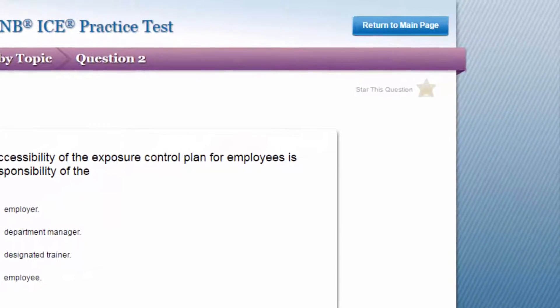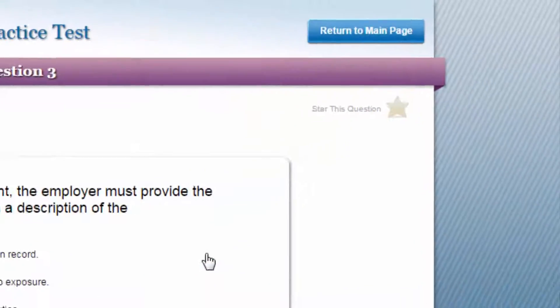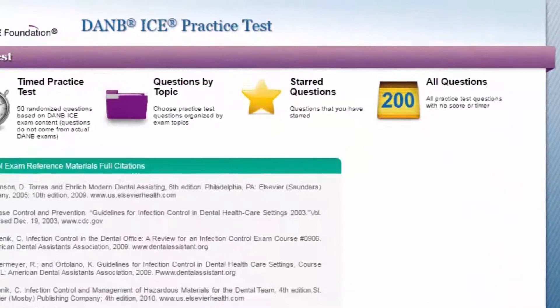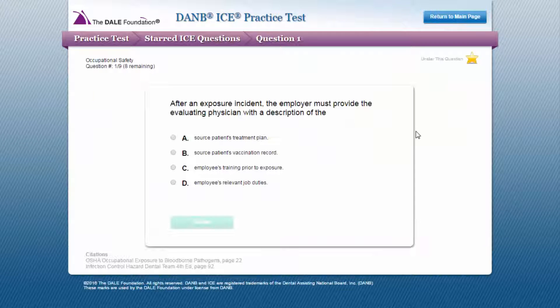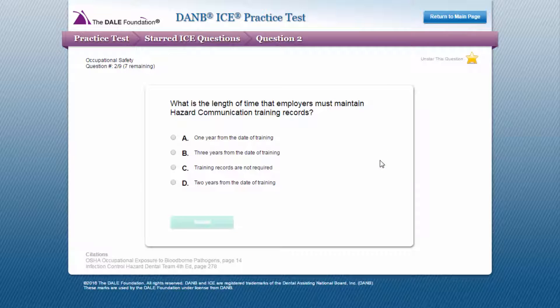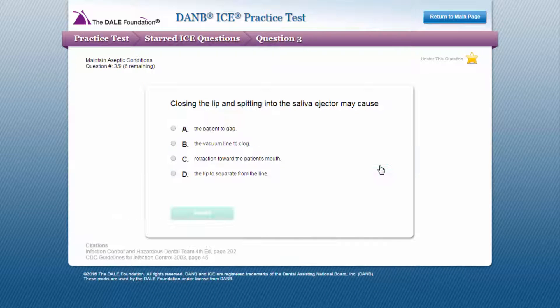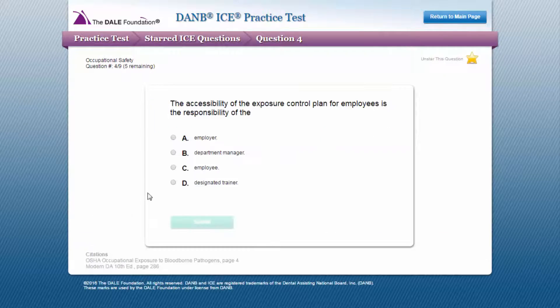Another feature of the Dale Foundation's DANB ICE Practice Test is the ability to star questions while going through a practice test. The questions you mark will be added to the starred questions review mode. This way you can go back and follow up on the questions for which you may be unsure of the answers. When you select starred questions from the test menu, you can review any questions you have previously starred and you'll be provided with immediate feedback including the correct answer. This option is available to you after you complete the timed practice test.